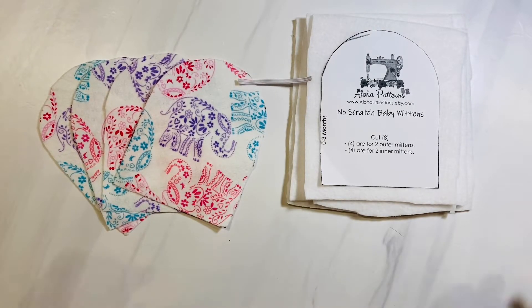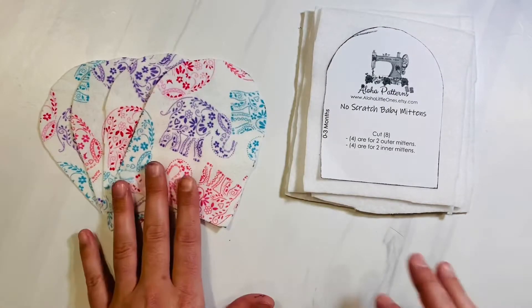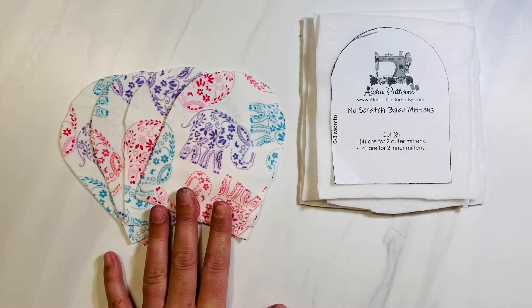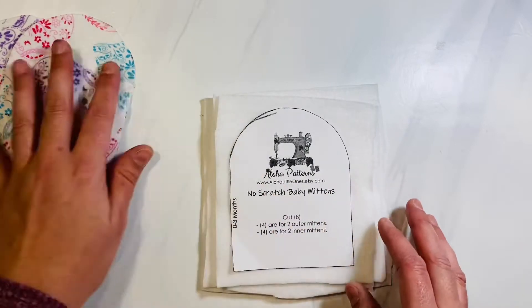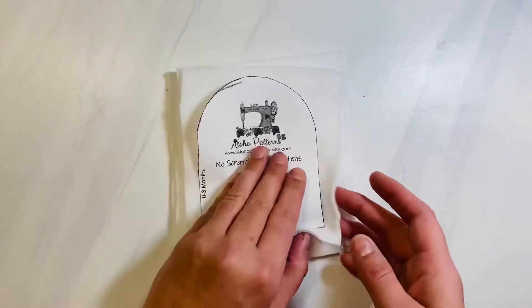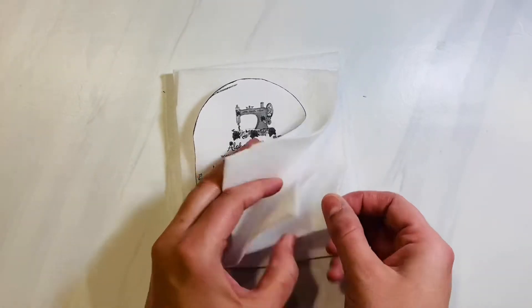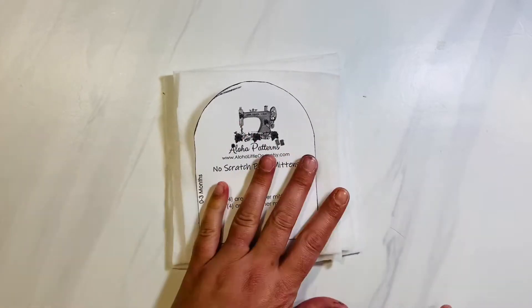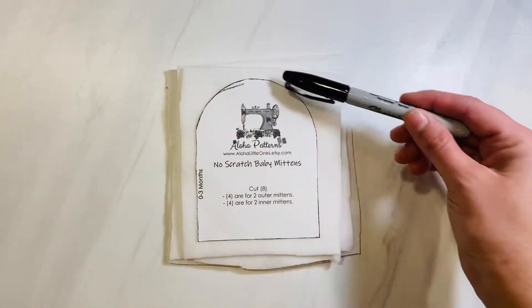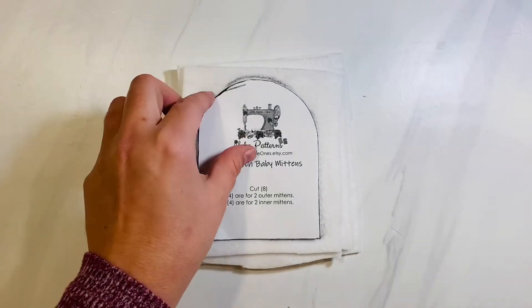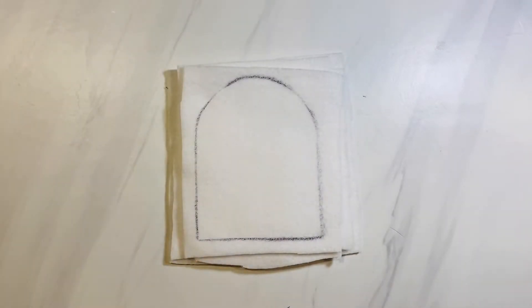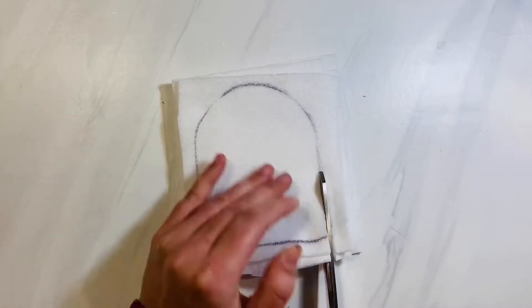Now I've already cut out my outer mitten pieces. You need two for each mitten, and this is for my inner mitten. This is reversible, but I'm just using white fleece on the inside today. You're going to stack four pieces of fabric right on top of each other. If you don't have a directional fabric, trace around the top fabric and you can cut it out all at one time. It just saves time and patience when it comes to cutting.